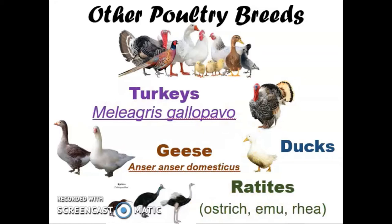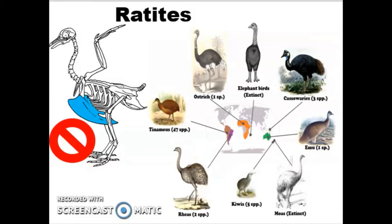What a ratite really is is a bird that is larger and doesn't have a keel in their breastbone. So it's a whole family of birds without this keel. The keel is used for balance both when swimming in water and when flying. These are all flightless birds, so since they don't need to fly, they don't need this keel area. They just have a regular flat breastbone like many mammals would have, and that's what sets them apart.